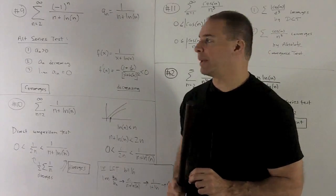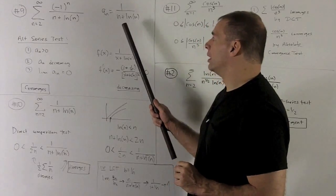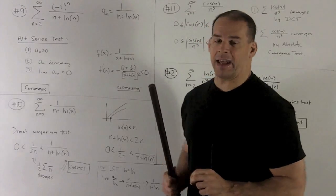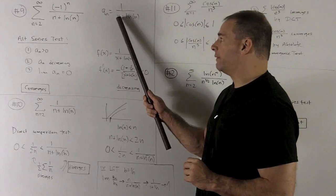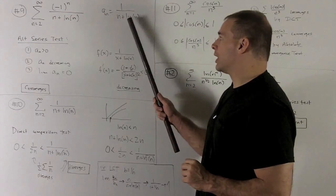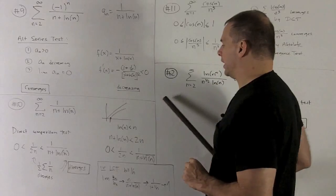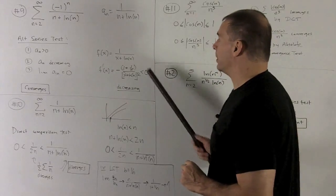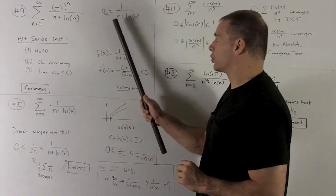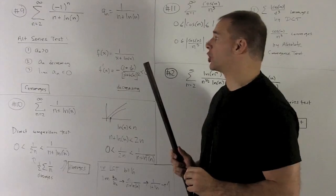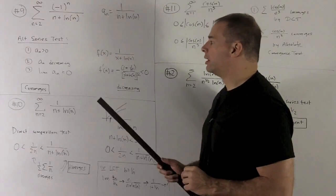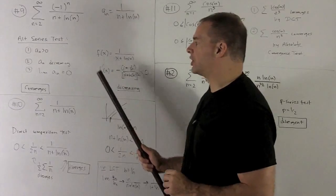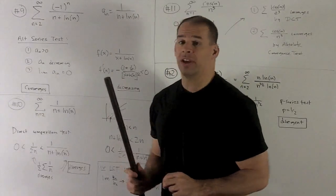To see that the limit of a sub n goes to 0, just note we have n plus natural log n in the denominator. n is definitely going to go off to infinity as n goes to infinity. Natural log of n is also going to go off to infinity as n goes to infinity. So, this thing in the bottom is growing larger without bound as n gets larger. So, we're looking at something that's getting driven down to 0. So, we have our three conditions and my original series converges.